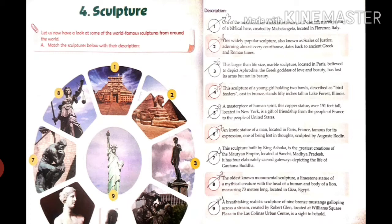Second one is related to the eighth picture. This widely popular sculpture — sculpture means statue — also known as the Scale of Justice, adorning almost every courthouse. 'Adorning' means showing worship or respect. This dates back to ancient Greek and Roman times, and the second description is related to the eighth picture.